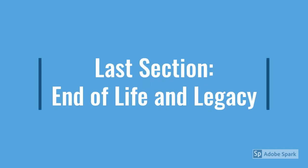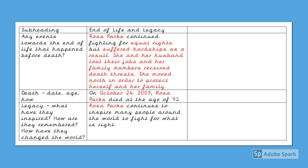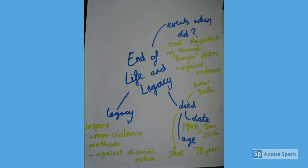Almost there — you're two thirds of the way through! Now we're going to look at the last section of the biography: the end of life and legacy. This is what the last section of our text map looks like once you've boxed it up. So we've got subheading, any events that happened towards the end of life, death, how and when the person died, and what legacy they've left behind. You need to have your mind map about Martin Luther King's end of life and legacy in front of you.